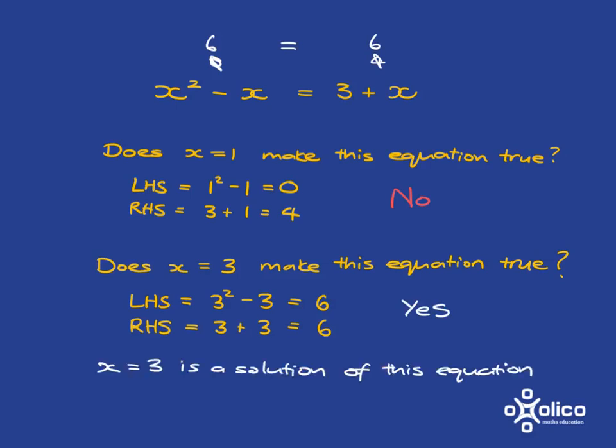And another way we can write this is to say that x equal to 3 is a solution of this equation. And similarly, we could also just say for this bit that x is 1 is not a solution of this equation.